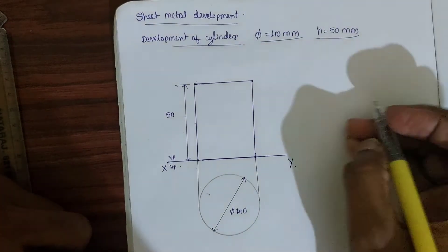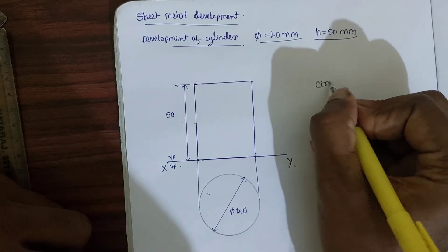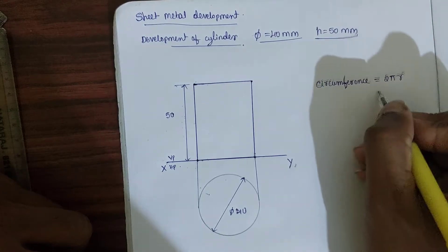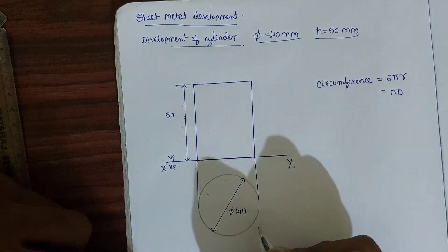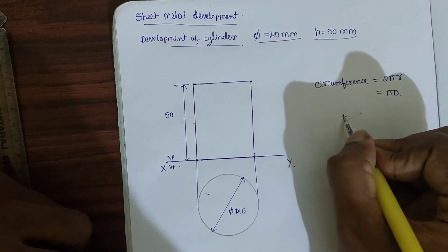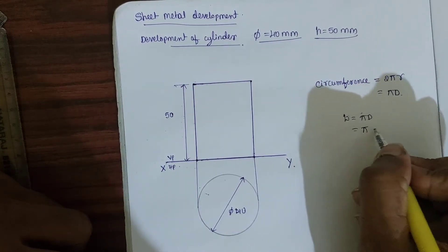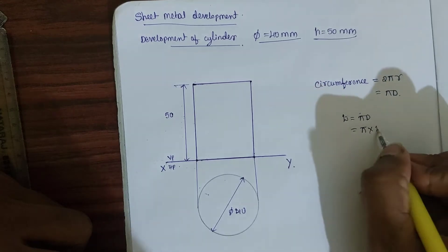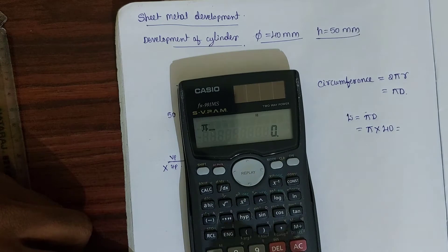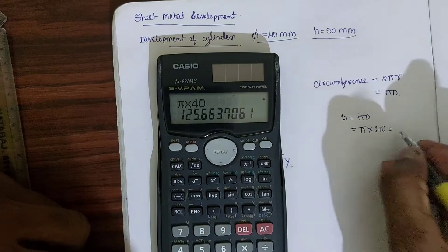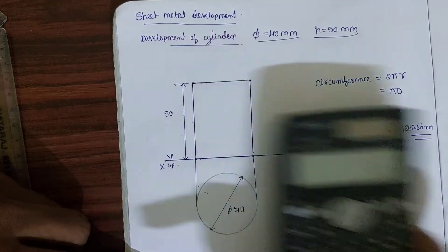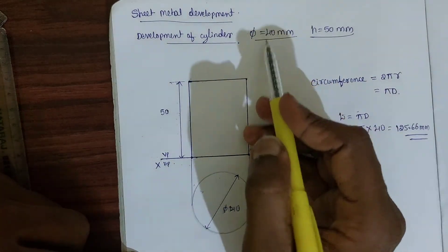To convert the arc length to linear distance, we use the formula: circumference = πd. So the length equals π × d, where π is 3.142 and d is the diameter, which is 40mm. Calculating: 3.142 × 40 = 125.66mm.